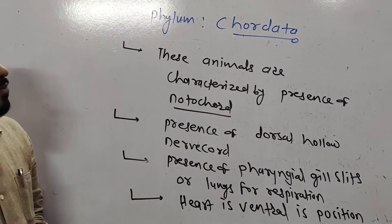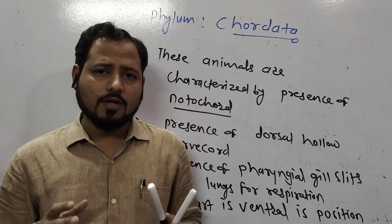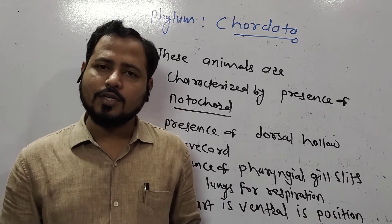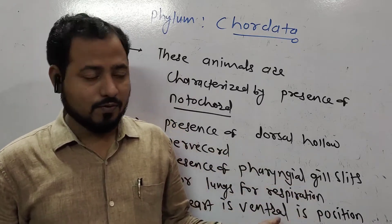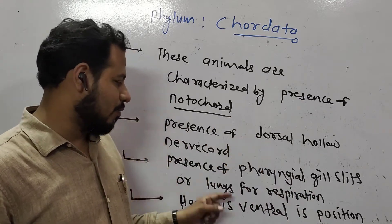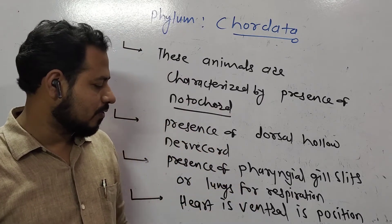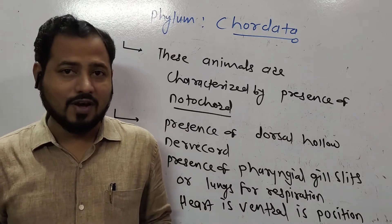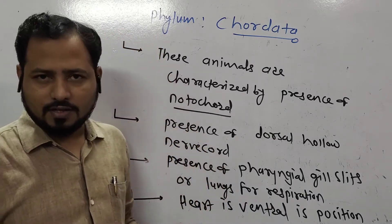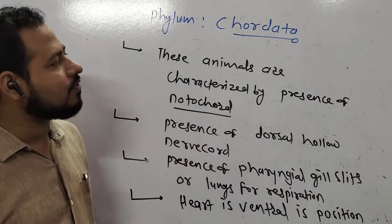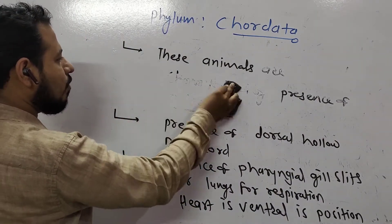Chordates are highly evolved animals. They show notochord — a dorsal, rod-like, stiff, supporting and isolating structure. They have a nerve cord which is a soft structure of neurons in dorsal position. They show either gills or lungs for respiration, a ventrally positioned heart, and most members possess a post-anal tail, though some exceptions exist. These are the four striking features of phylum Chordata.